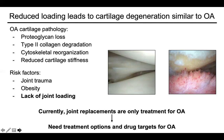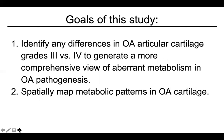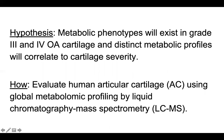Because the unloading environment in space could lead to catabolism and cartilage degeneration similar to OA, we analyzed human OA cartilage explants to better understand the metabolic shifts in OA with the ultimate goal of identifying potential drug targets. The goals of this study were to identify any differences in OA articular cartilage grades 3 versus 4, to generate a more comprehensive view of aberrant metabolism in OA pathogenesis, and to spatially map metabolic patterns in OA cartilage. My hypothesis was that metabolic phenotypes will exist in grades 3 and 4 OA cartilage and distinct metabolic profiles will correlate to cartilage severity.